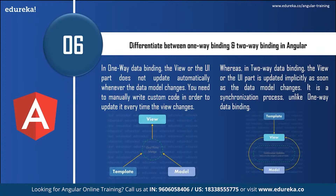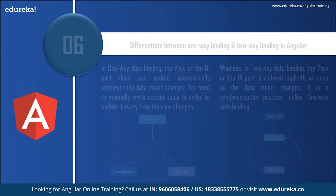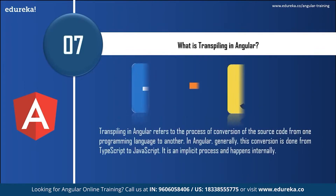What is the difference between one-way binding and two-way binding? In one-way binding, the view or UI part does not update automatically whenever the data model changes — you need to manually write custom code to update it. Whereas in two-way data binding, the view or UI is updated implicitly as soon as the data model changes — it is a synchronization process. Describing this with a diagram impresses the interviewer even better.